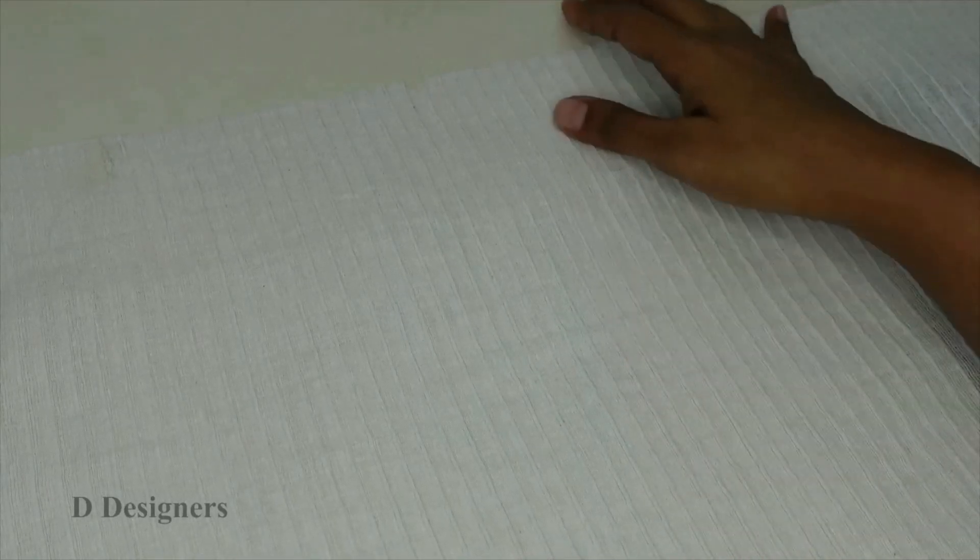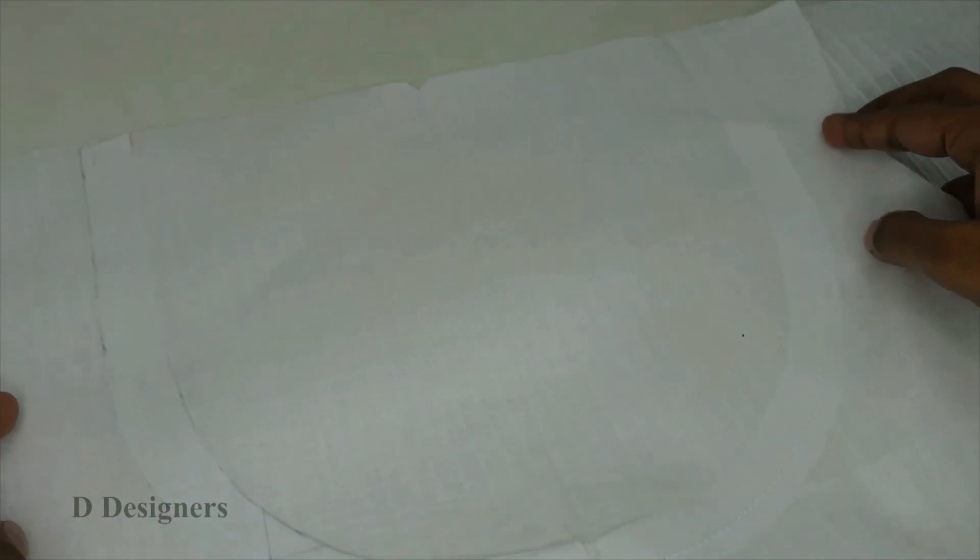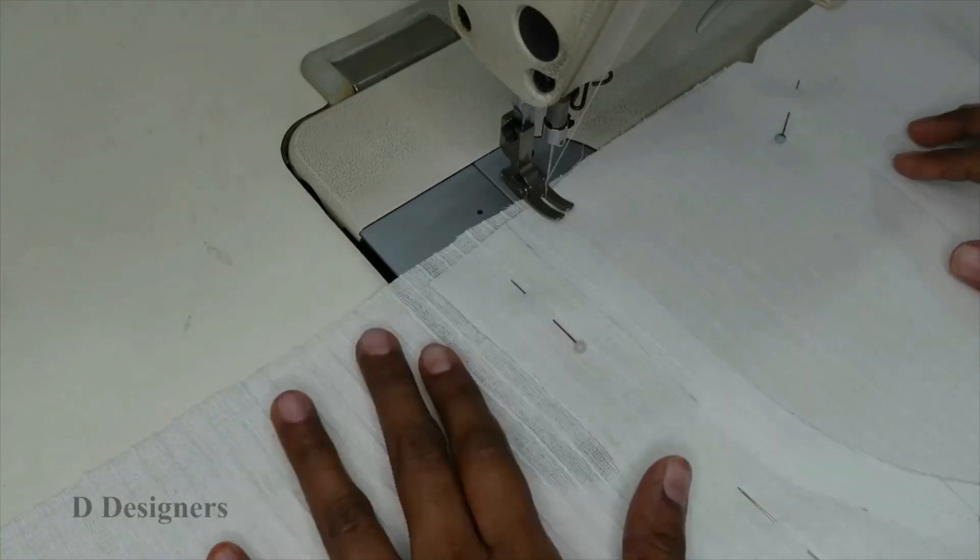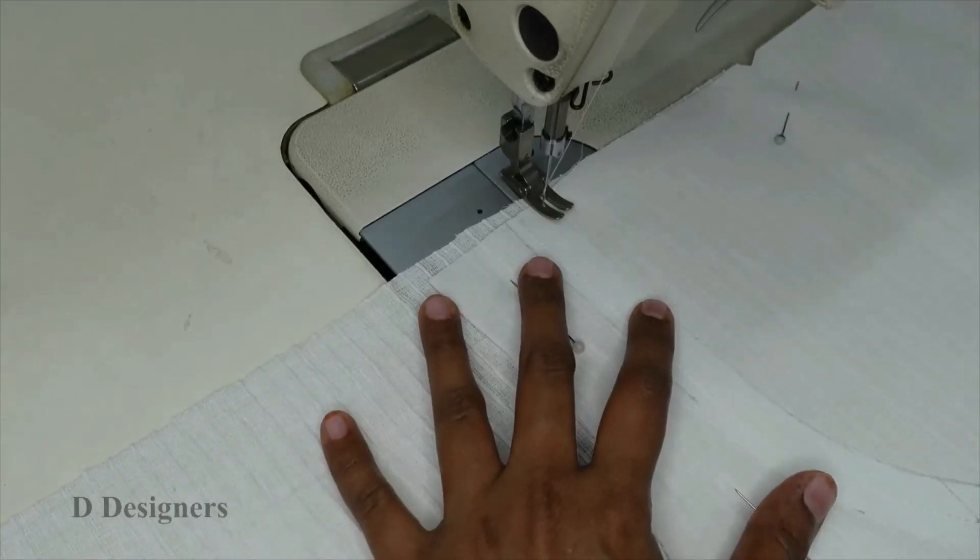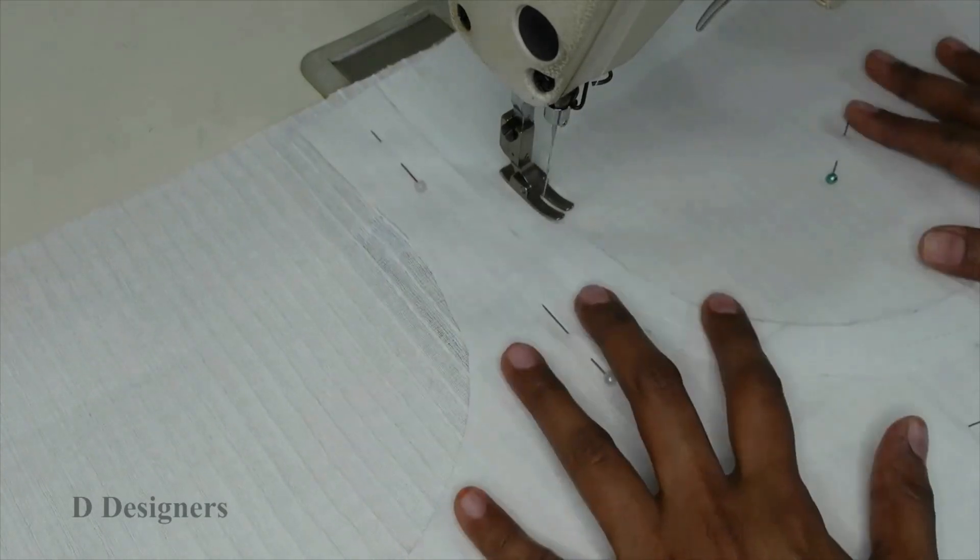Now I have taken the main fabric and I marked the center for the neck. And in the lining fabric I have pasted the second neckline. And I keep the fabric matching the center. And I have pinned already. And I am going to stitch on the neckline.